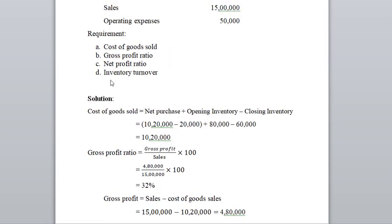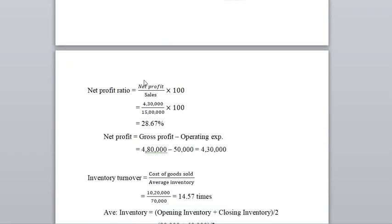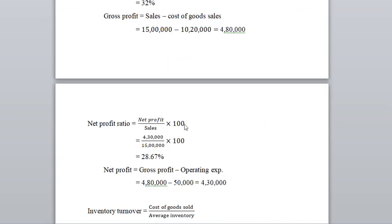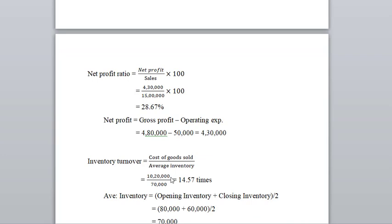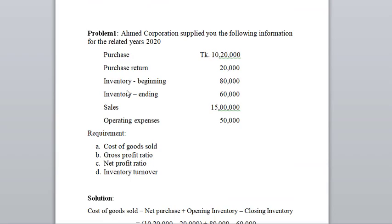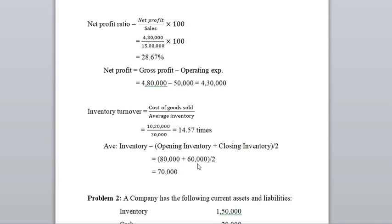For inventory turnover, the formula is cost of goods sold divided by average inventory. Cost of goods sold is $10,20,000. Average inventory equals opening inventory plus closing inventory divided by two: $80,000 plus $20,000 divided by two equals $50,000. Inventory turnover is approximately 14 times.